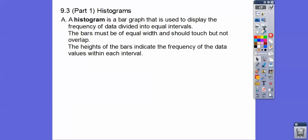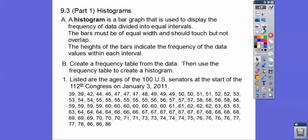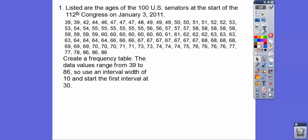The bars have to be equal width and should be touching each other but not overlapping. You guys have all done this before. The heights of the bars indicate the frequency of the data values within each interval. So we're going to create a couple of frequency tables from the data here and then we'll take those frequency tables and create histograms or bar graphs. Don't let all these numbers confuse you. These are the ages of the 100 U.S. Senators at the start of the 112th Congress on January 3, 2011.